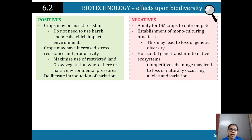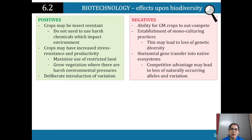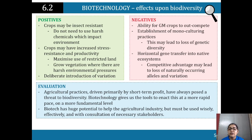Regarding the effects of biotechnology on biodiversity: positives include crops that may be insect-resistant, meaning we don't have to use chemicals, and crops with increased stress resistance and productivity, maximizing use of restricted land and enabling growth in harsh environments, as well as deliberate introduction of variation. Negatives include the ability of GM crops to out-compete native species, the establishment of monoculturing practices — as with Cavendish bananas — horizontal gene transfer into native ecosystems, and competitive advantage that may lead to loss of naturally occurring alleles and variation.